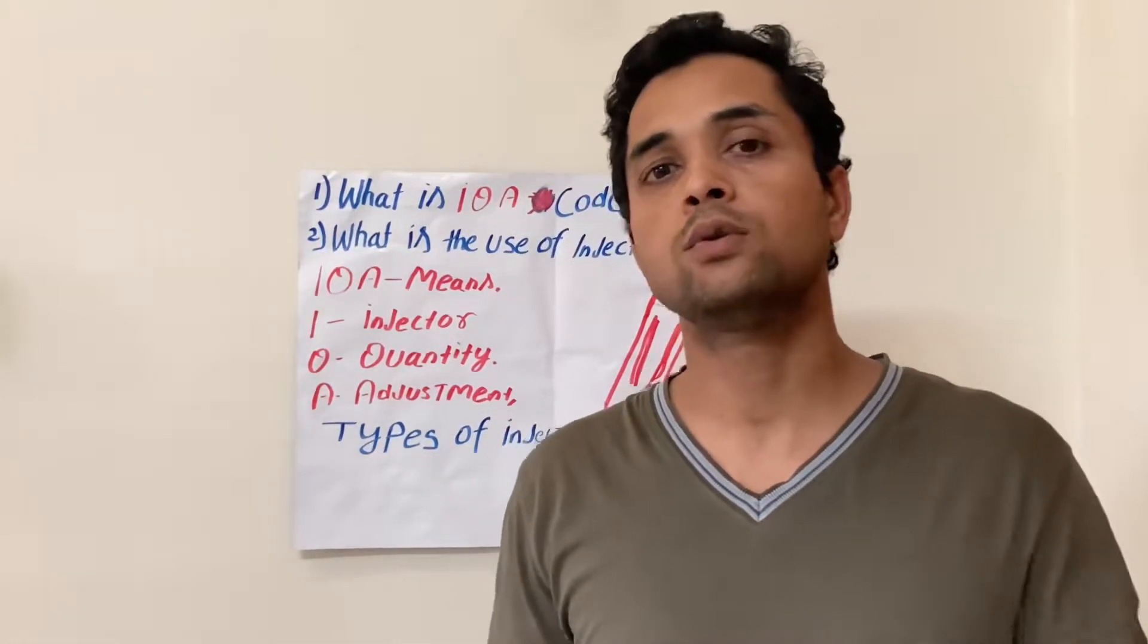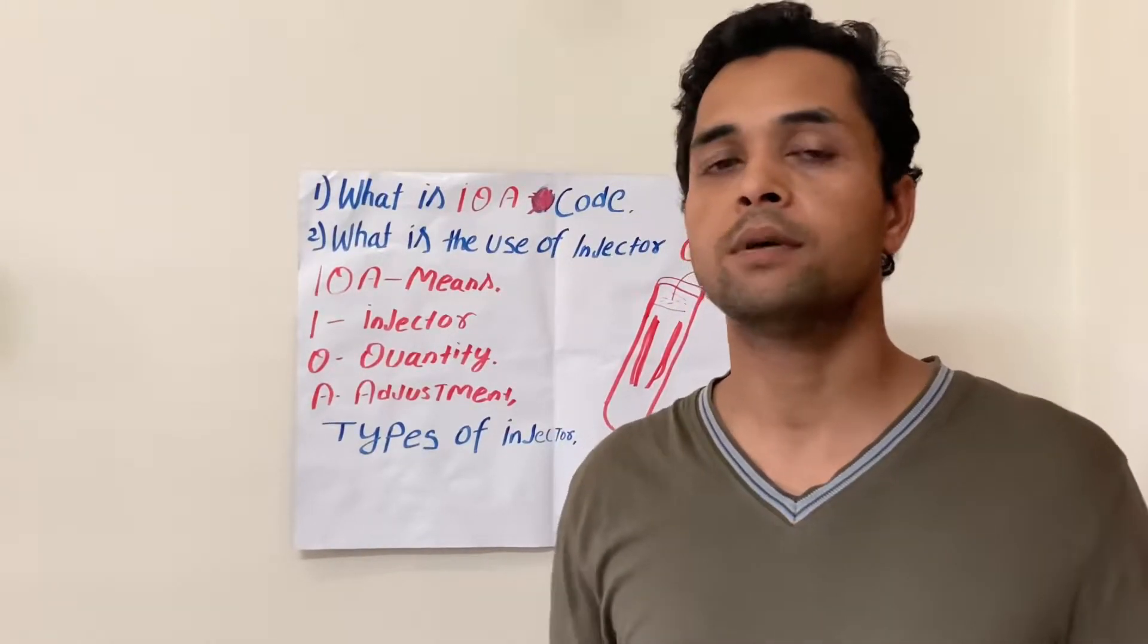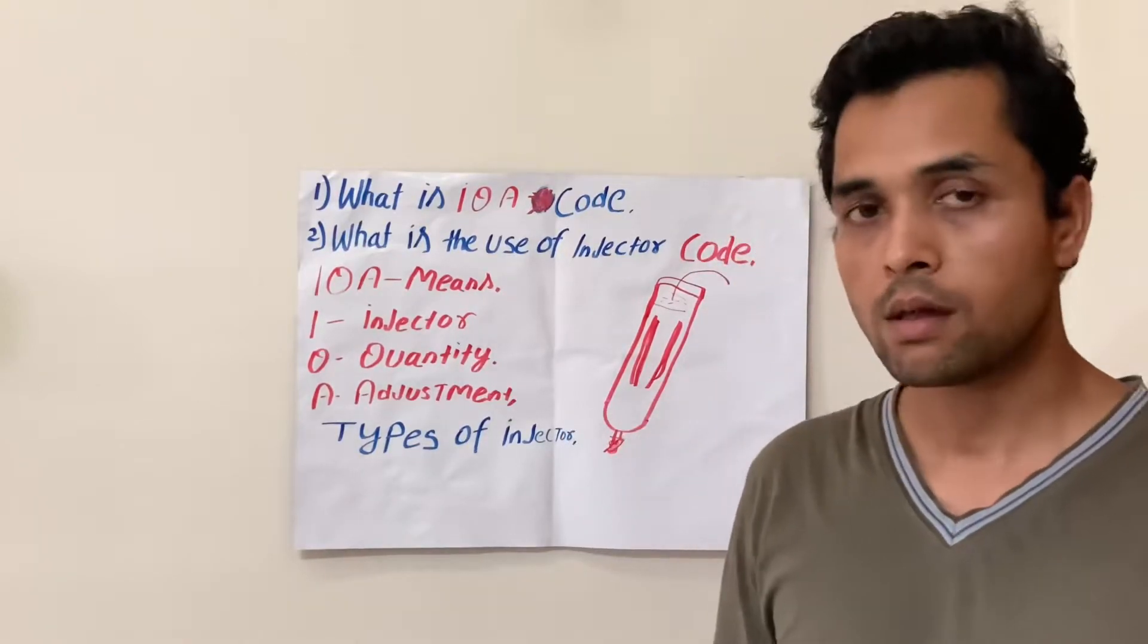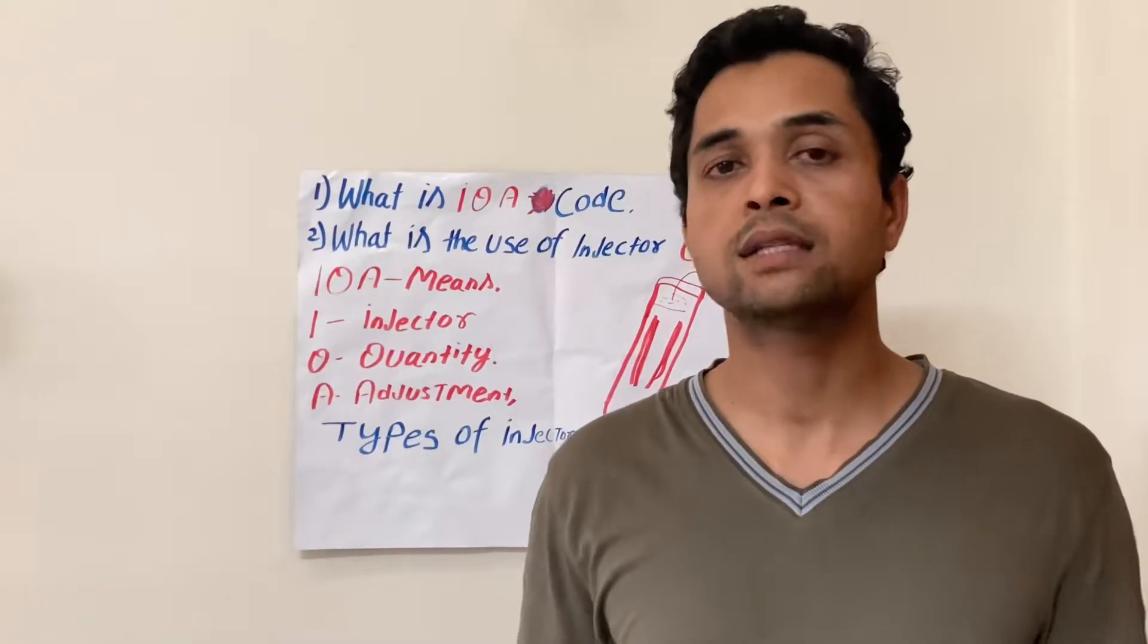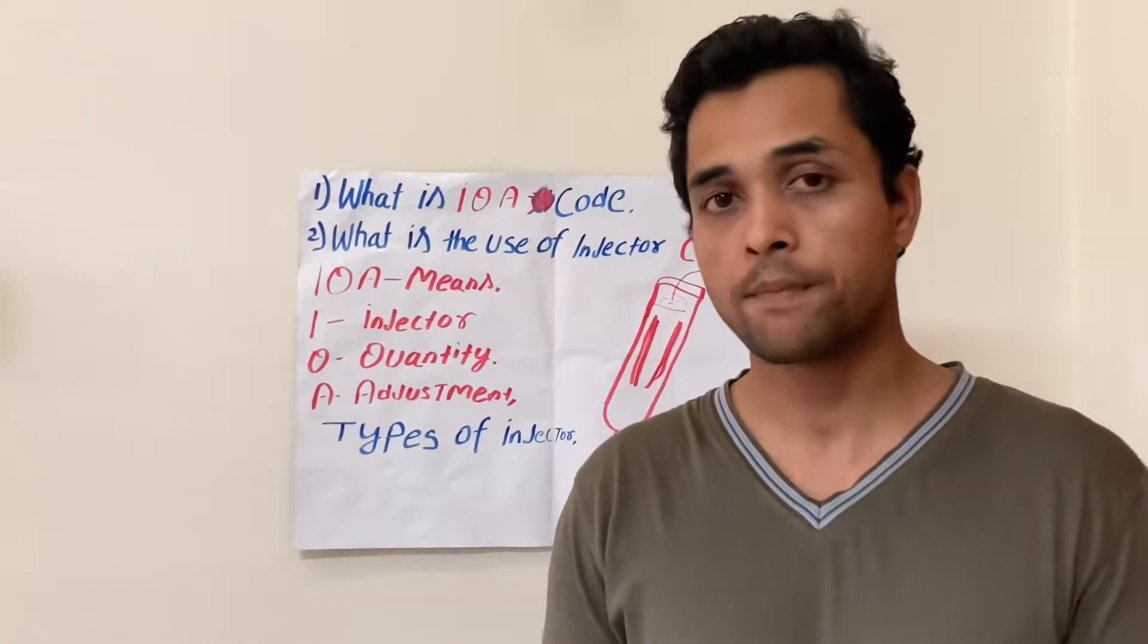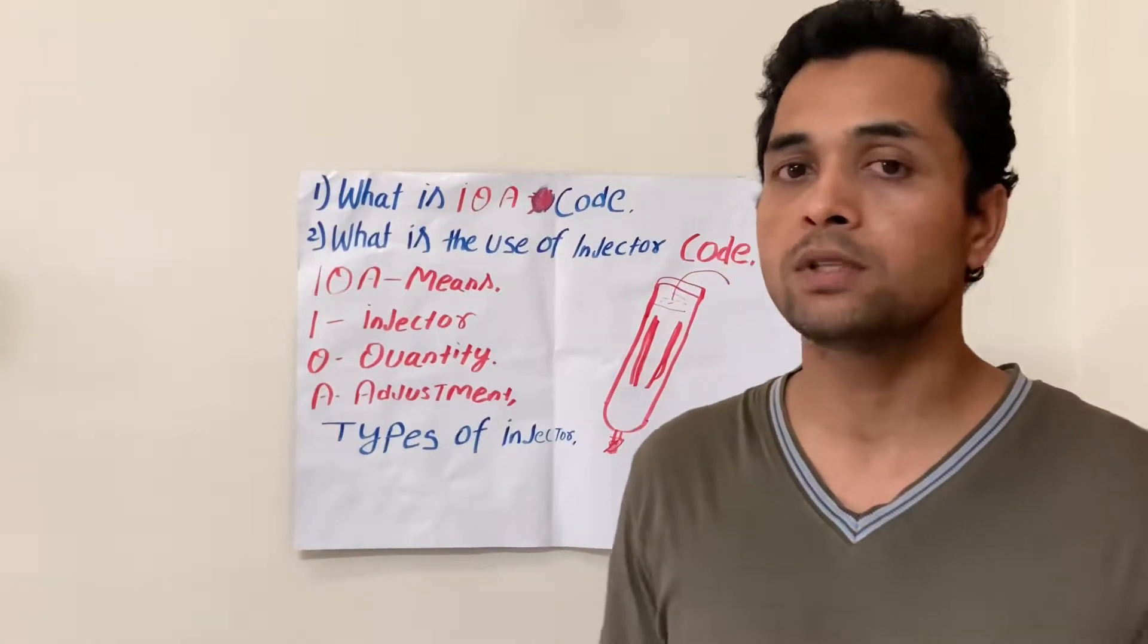Alphabets A to Z and numbers 0 to 9 are used for this alphanumeric code. This code is given to fuel injectors after manufacturing. The injector is tested in a test lab to evaluate the injector's performance.